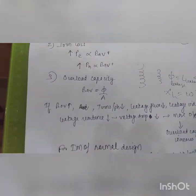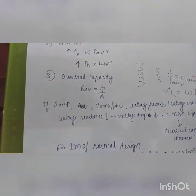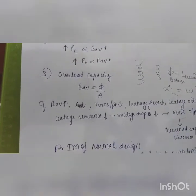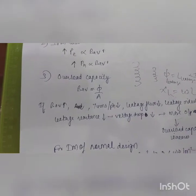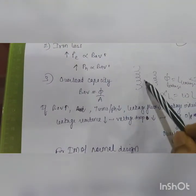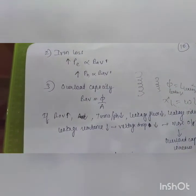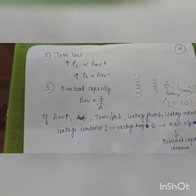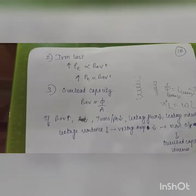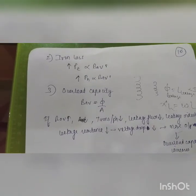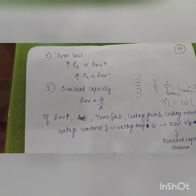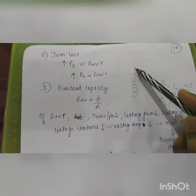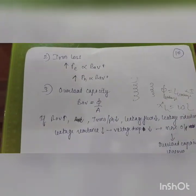When iron losses increase and heat develops, the turns per phase must be reduced to manage temperature. As turns per phase decrease, leakage flux decreases. With a higher number of turns, leakage flux is increased; with fewer turns, leakage flux is less. Leakage flux is flux that links with windings but does not contribute to EMF production.